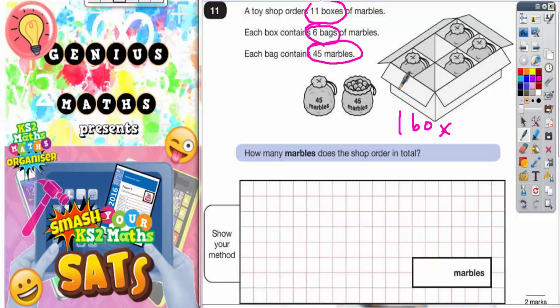So we've got 45 marbles in each of the six bags. So in the one box we've actually got 45 times 6.